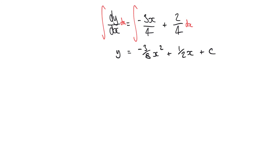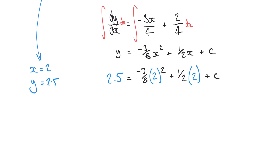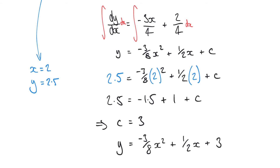This is our general solution, but we don't know the value of the unknown constant c. We remember that when x equals 2, y equals 2.5, so we substitute those values into our equation. Solving for c we find that c equals 3. So our particular solution is y equals minus 3/8 x squared plus 1/2 x plus 3.